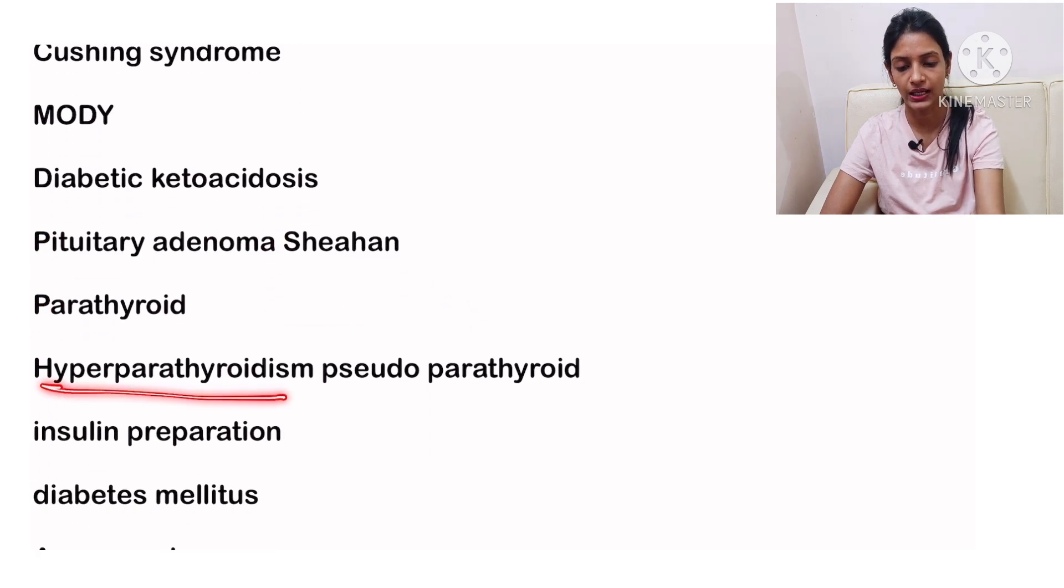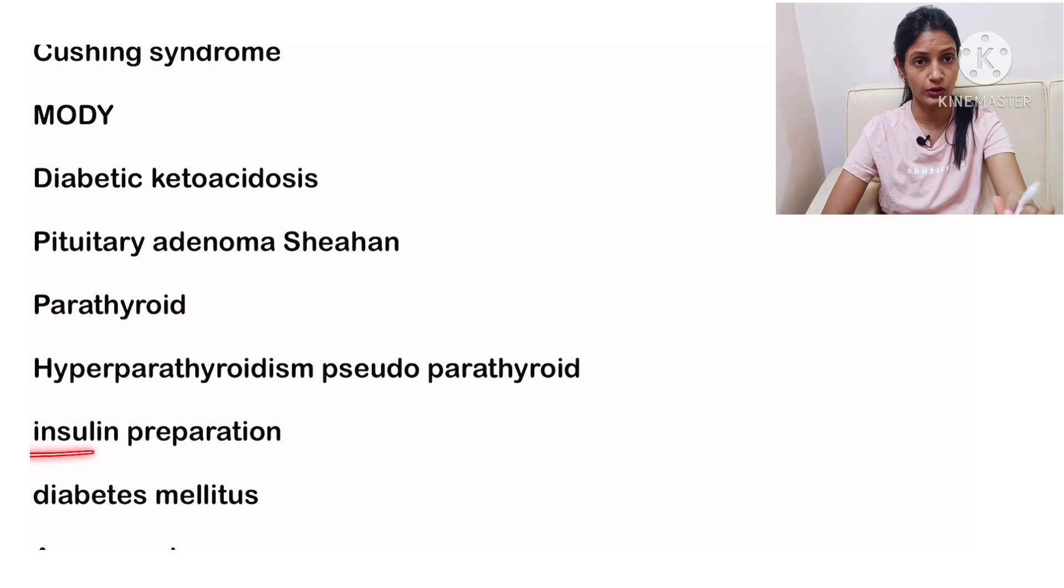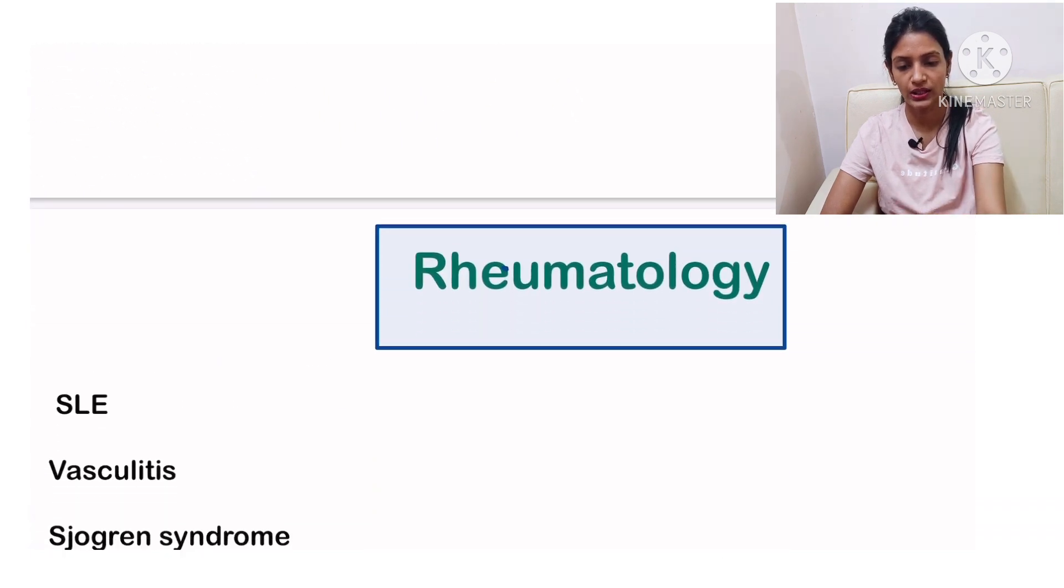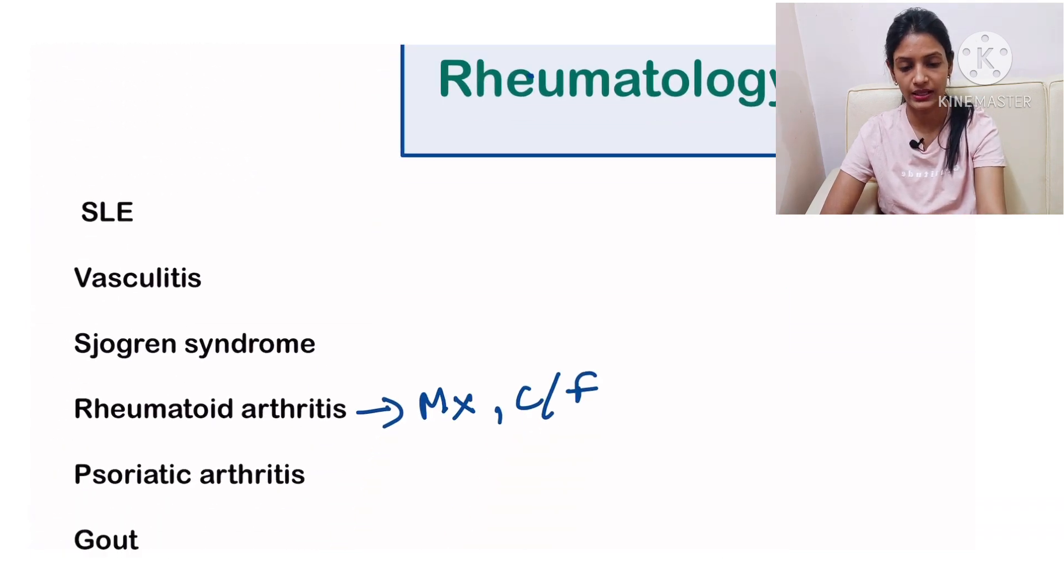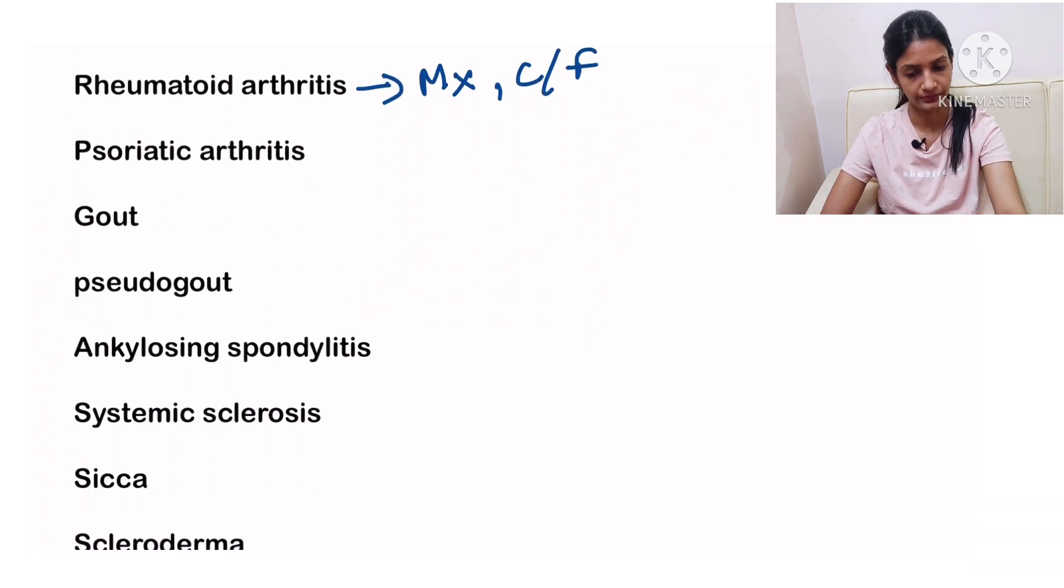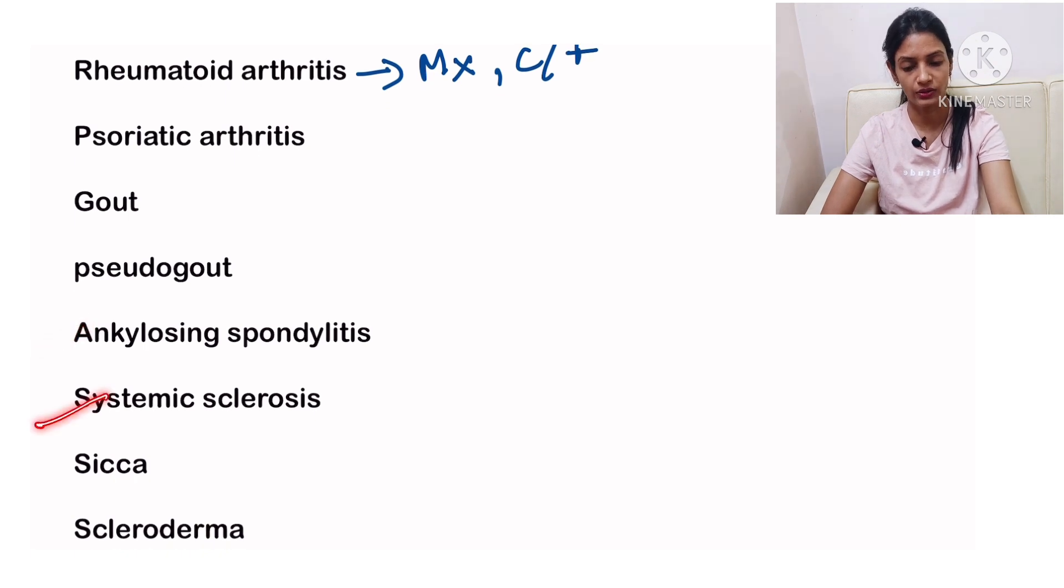You can expect these questions from the endo unit. Next is rheumat. In rheumat they can ask you SLE, vasculitis, Sjogren's, rheumatoid arthritis—its management and clinical features, very important—then psoriatic arthritis, gout, pseudogout, ankylosing spondylitis, systemic sclerosis, CREST, and scleroderma. This is all about the rheumat unit.